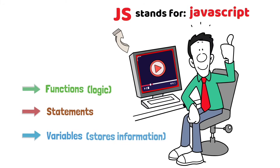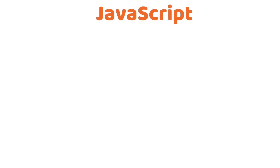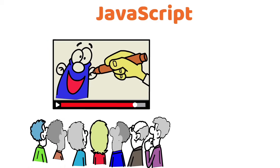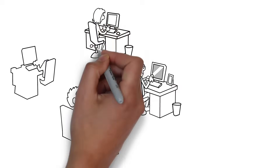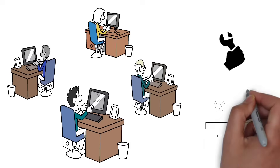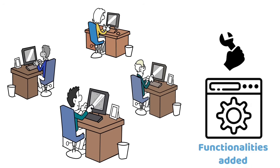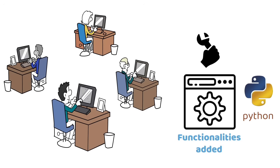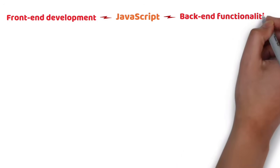You might be wondering why JavaScript is considered a front-end program when it can establish logic and store some information. JavaScript was originally used to create animation or responsiveness on a website. However, more recently, developers started using JavaScript not only as a tool to make a website more responsive, but to also add functionality without having to use other languages like Python. Thus, although JavaScript is associated with front-end development, it can also be used for some back-end functionalities.